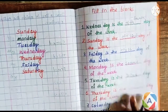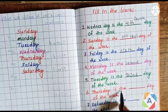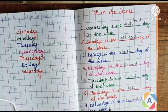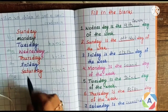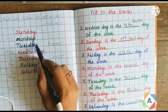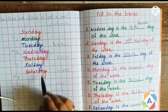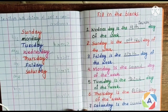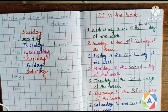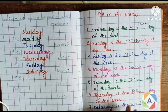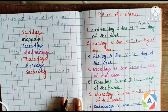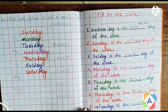Then Saturday is the dash day of the week. Saturday is the seventh day — S-E-V-E-N-T-H, seventh day of the week. I hope this was helpful.